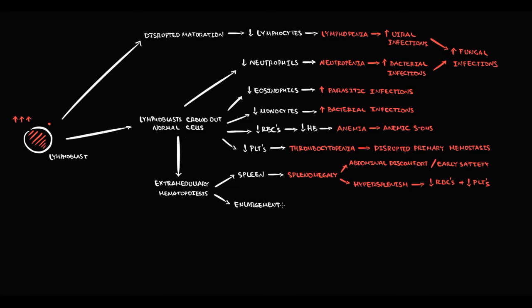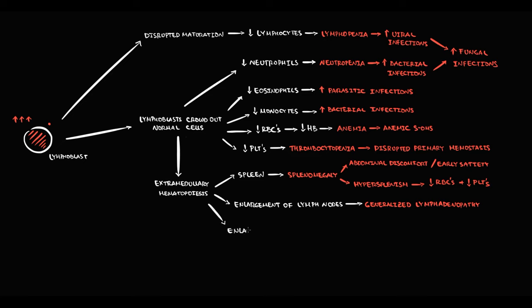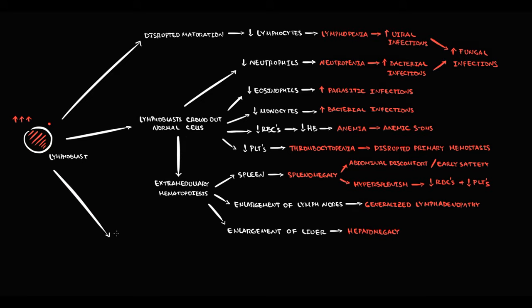A large number of cells also migrate to lymph nodes — as the quantity of cells inside lymph nodes increases, they enlarge. Enlargement of multiple lymph nodes throughout the body is called generalized lymphadenopathy. When spleen and lymph nodes are full, cells migrate to the liver — the other previous site of hematopoiesis — and progressively accumulate there, causing enlargement of the liver, called hepatomegaly.